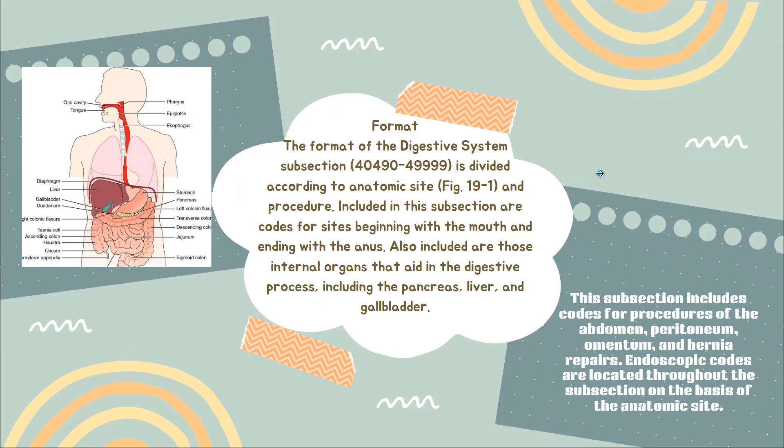Included in this subsection are codes for sites beginning with the mouth and ending with the anus. Also included are those internal organs that aid in the digestive process, including the pancreas, liver, and gallbladder. This subsection includes codes for procedures of the abdomen, peritoneum, omentum, and hernia repairs. Endoscopic codes are located throughout the subsection on the basis of the anatomic site.